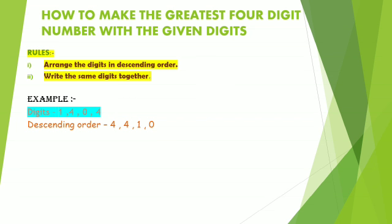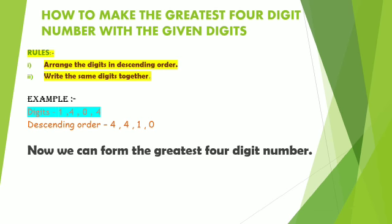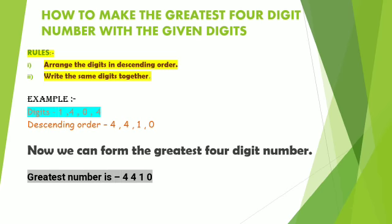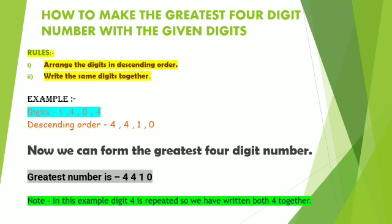Example: there are 4 digits — 1, 4, 0, and 4. In descending order: 4, 4, 1, 0. Now we can form the greatest 4-digit number. The greatest number is 4410. In this example, digit 4 is repeated, so we have written both 4s together.